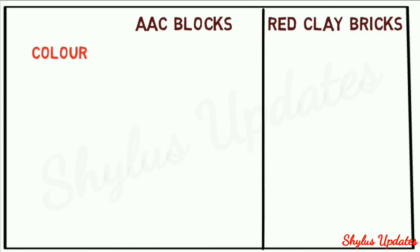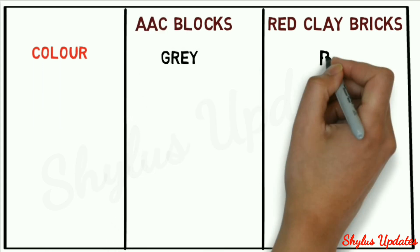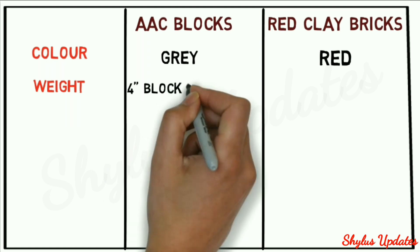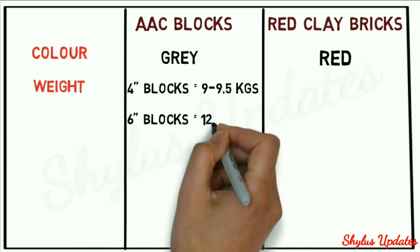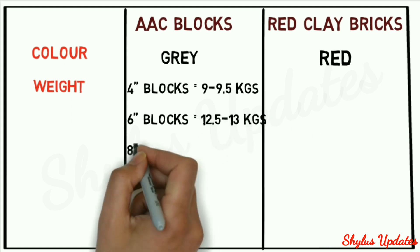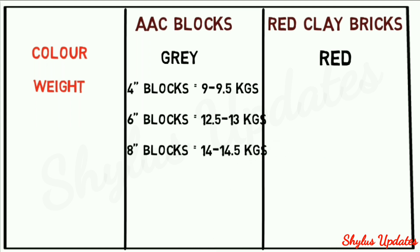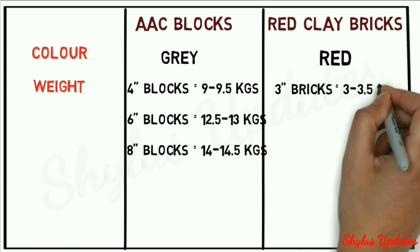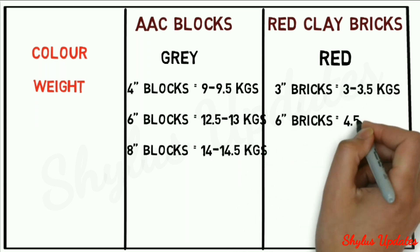Color of AAC blocks is grey; color of red clay bricks is red. Weight of AAC blocks: 4-inch blocks 9 to 9.5 kg, 6-inch blocks 12.5 to 13 kg, 8-inch blocks 14 to 14.5 kg. Weight of red clay bricks: 3-inch bricks 3 to 3.5 kg, 6-inch bricks 4.5 to 5 kg.